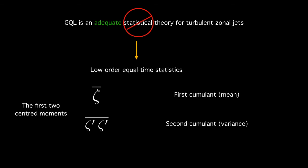To convert this to a statistical theory we first define the statistics. These are low order equal time statistics. So the first two centered moments are the mean and variance and these we call the first and second cumulant. We are interested in solving for these so we need to write down equations for these and derive them from the GQL equations. So in order to do that we follow a familiar recipe.